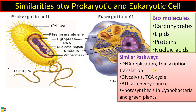Apart from these, there are many similar pathways like DNA replication, transcription, and translation, with slight modifications in prokaryotic and eukaryotic cells. Glycolysis is a universal cycle, and the TCA cycle also occurs in both. ATP — adenosine triphosphate — is the energy source in both prokaryotic and eukaryotic cells.